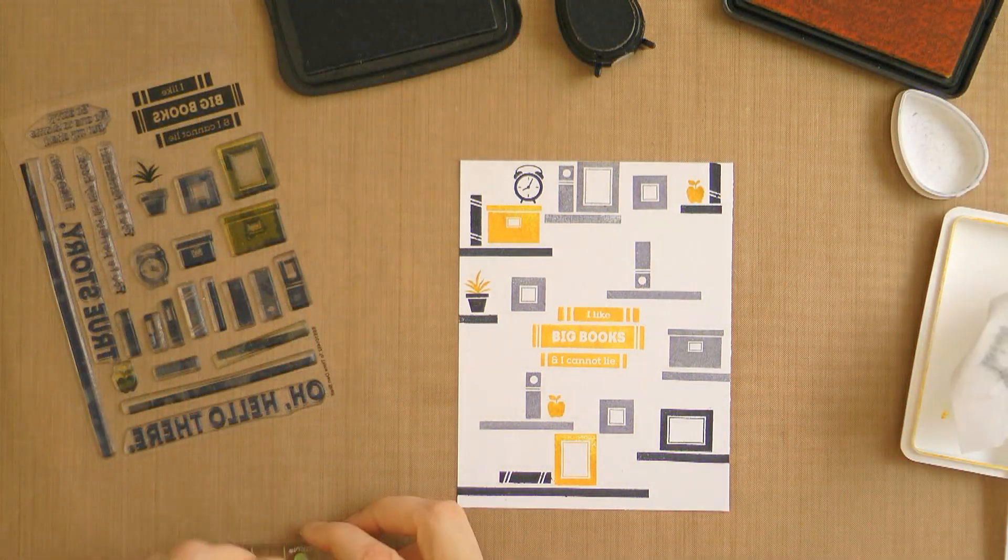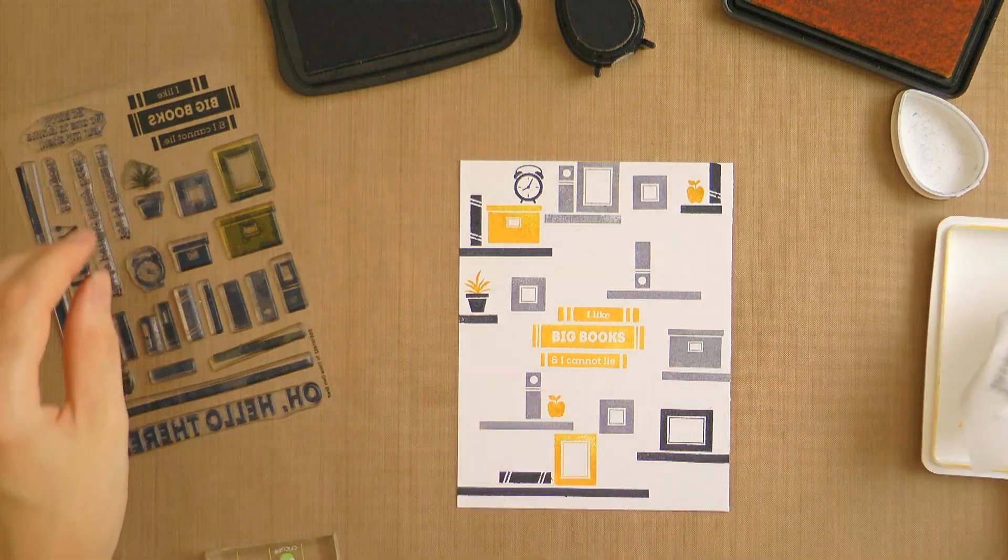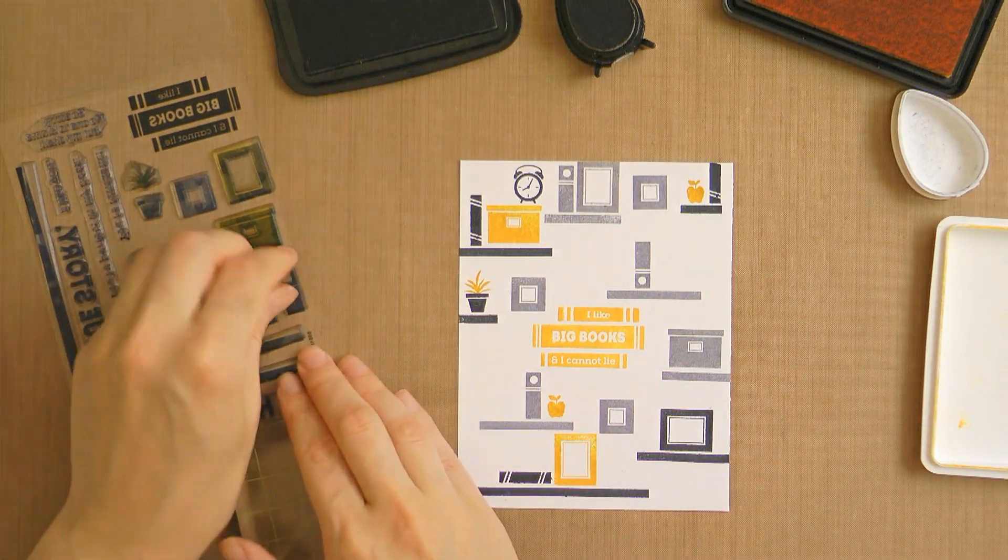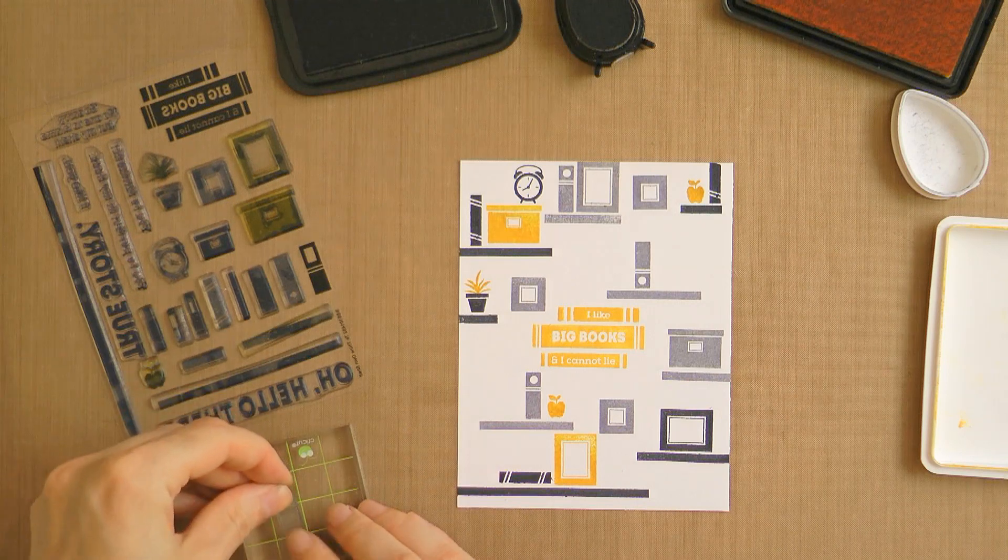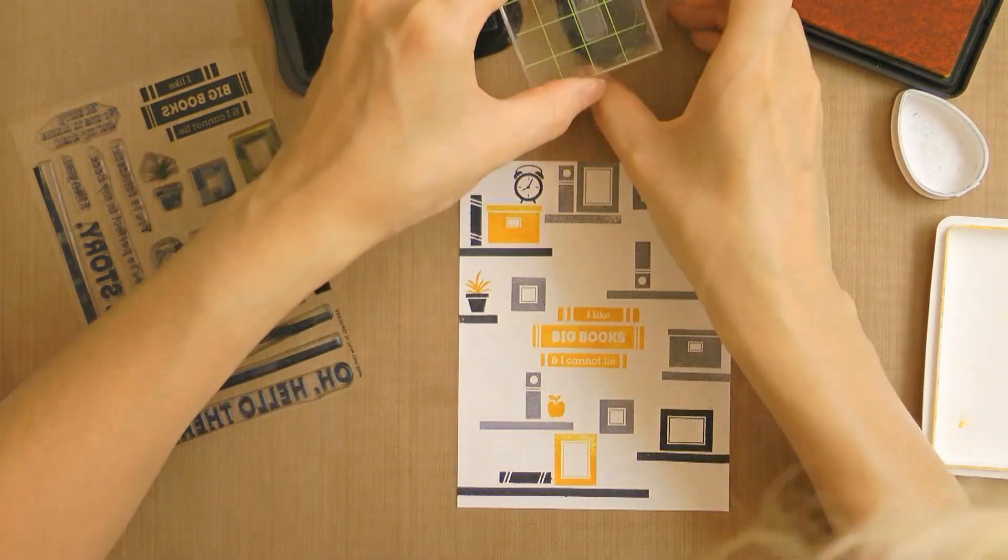I also added the little plant and I love that it's two separate stamps. You can have the flower pot stamped in any color and then add the actual plant in green or yellow if you like.